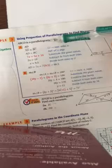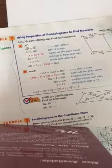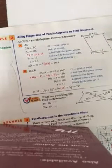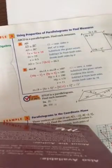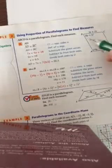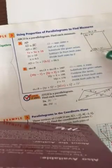We're using the properties we've learned to now find the measures of angles and sides. They tell us ABCD is a parallelogram. Find each measure. The properties of parallelograms tell us that the opposite sides are going to be parallel and congruent, the alternate angles are going to be congruent, and the consecutive angles are going to be supplementary.